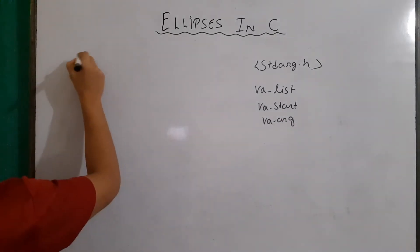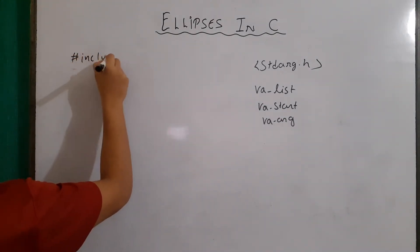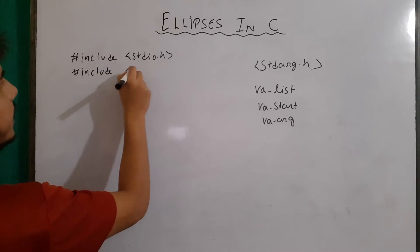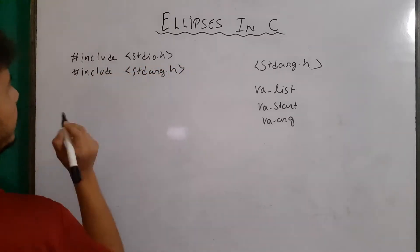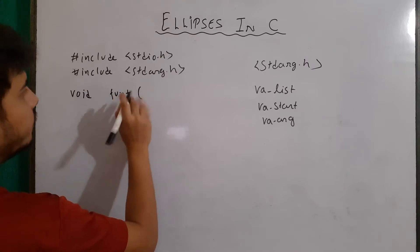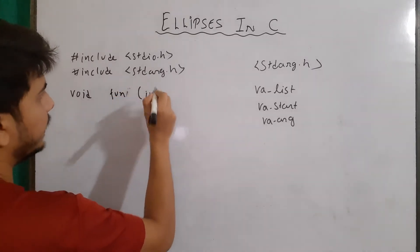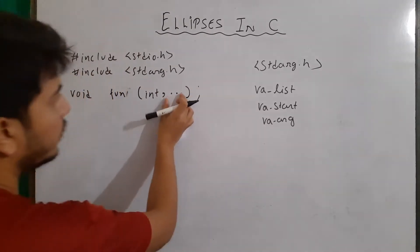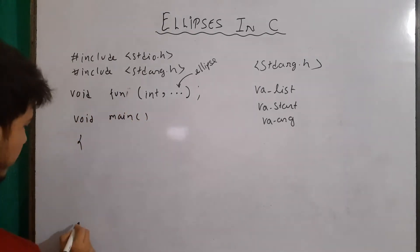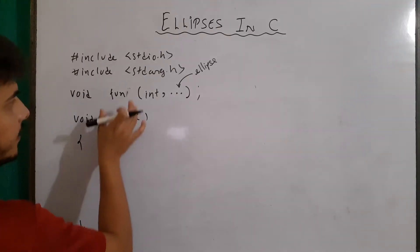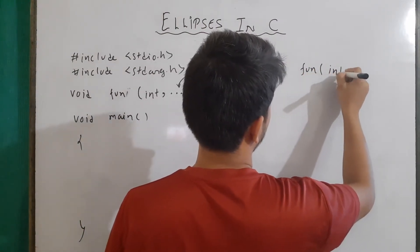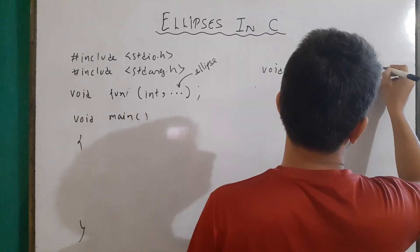Let's see how we can use it. First of all, we'll write #include stdio.h and then #include stdarg.h. Now we have to write the prototype of our function. I'll write void fun, and for the first parameter I'll write integer, and then I'll write triple dot — this triple dot means ellipsis. Then I'll write void main, and for now keep it empty, and then write the definition of our function. I'll write void fun, then int total, and then triple dot.